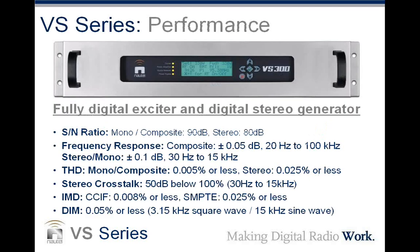Let's talk about performance. All of these VS series transmitters have no compromise in terms of audio performance. We're talking about a 90 dB signal-to-noise ratio in mono or composite mode, 80 dB in stereo. Frequency response is absolutely flat, plus or minus 0.05 dB. THD is 0.005% or less in mono, 0.025% or less in stereo. Crosstalk is 50 dB below 100%. IMD and DIM numbers are among the best you'll find anywhere in the industry.